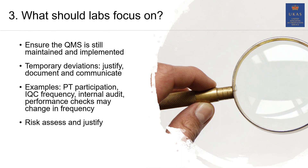The thing about change is that it can often cause temporary deviations. Temporary deviations from procedure are absolutely normal. We've released a new publication on our website, TPS 73, which talks about deviations during the COVID-19 outbreak — but deviations could happen at any time. What we're looking for when we assess you is that you justify, document, and communicate those deviations. Quite often that means communicating them to your laboratory staff, but also communicating them to us. The UCAS agreement asks that you inform us of any significant changes as soon as possible.